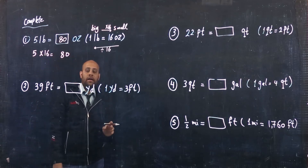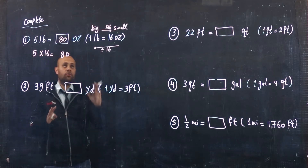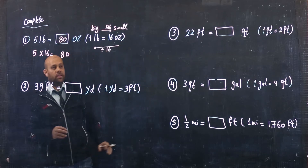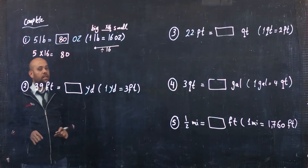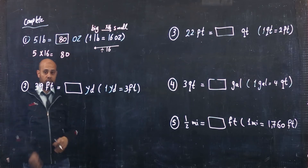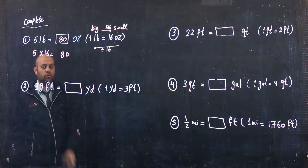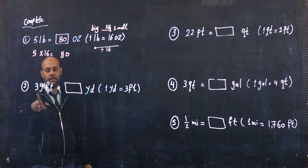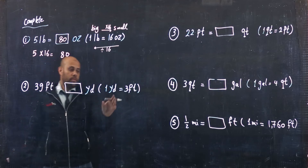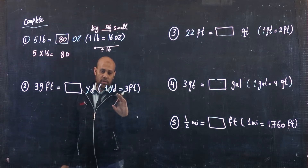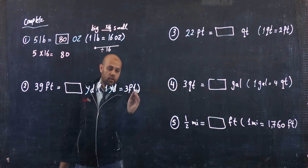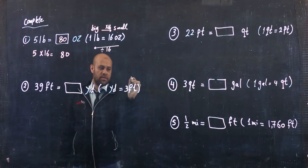If you know the main idea — how to convert from big to small by multiplication, and from small to big by division — you can solve any unit conversion. Let's go to another exercise: 39 feet equals how many yards? 1 yard equals 3 feet.